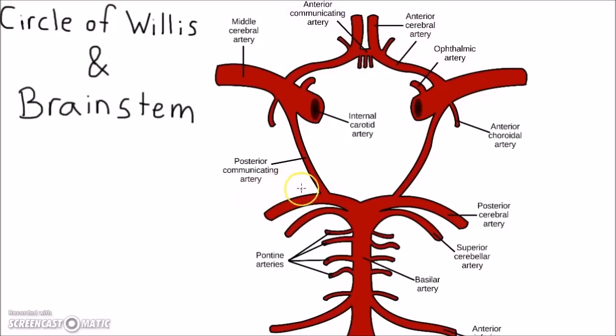Posterior to the internal carotid are the two posterior communicating arteries connecting to the posterior cerebral arteries. Finally, the most posterior artery of the circle is the basilar artery.